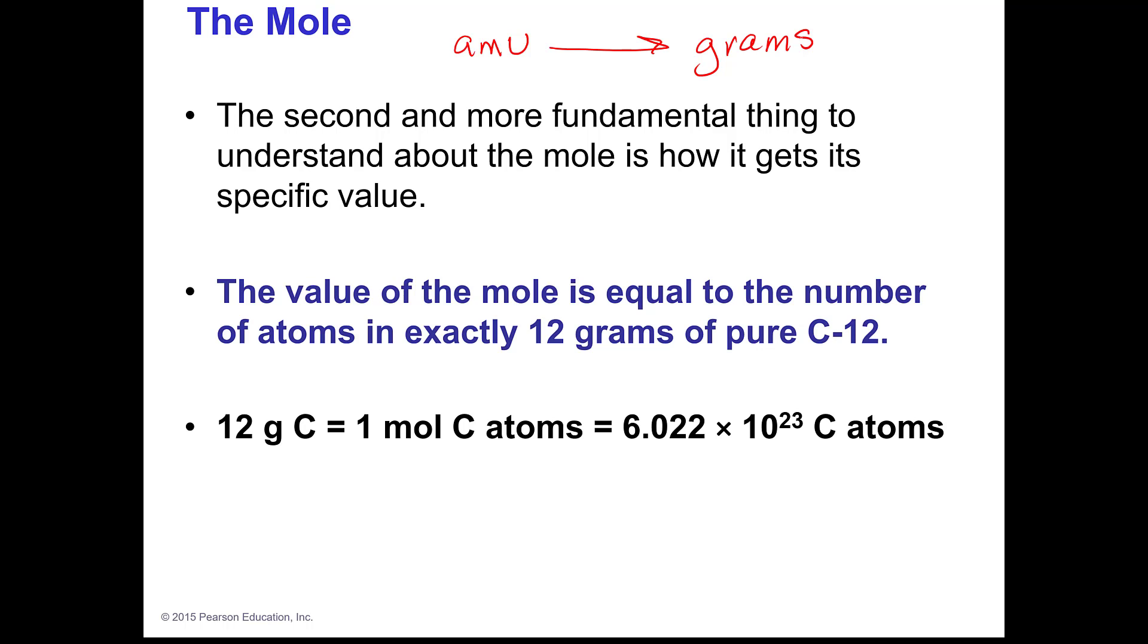The value of a mole is equal to the number of atoms in exactly 12 grams of pure carbon-12. We used carbon because that's mainly what we're made of, so we use that as a standard. So 12 grams of carbon exactly is one mole of carbon atoms, which is 6.022 times 10 to the 23rd carbon atoms, and everything else we compare to that.